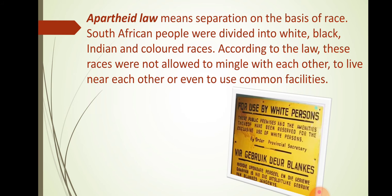What does Apartheid laws mean? Apartheid means separation on the basis of race. South African people were divided into white, black, Indian, and colored races. According to the law, these races were not allowed to mingle with each other, to live near each other, or even to use common facilities.